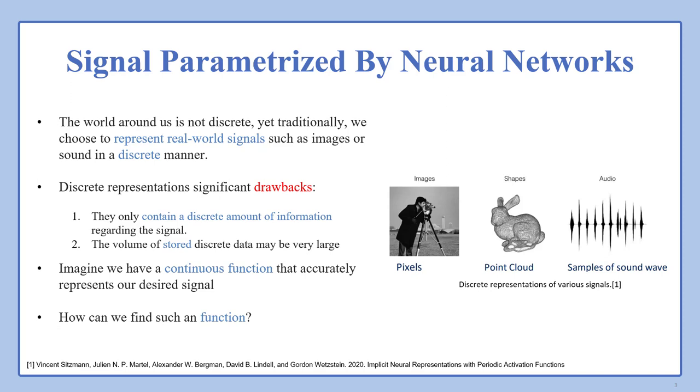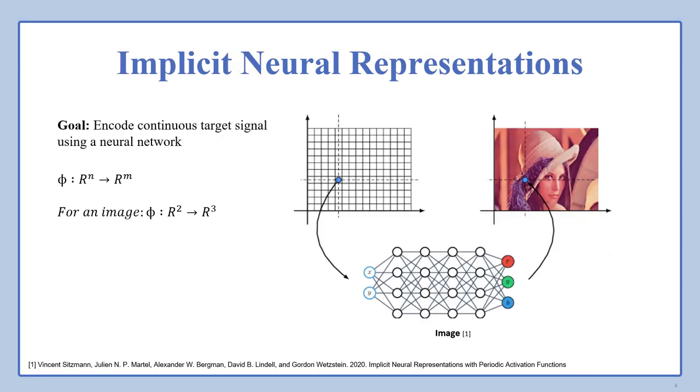Imagine we have a continuous function that accurately represents our desired signal. How can we find such a function? This is implicit neural representations. The goal of INR is to encode continuous target signals using a neural network, so we have a mapping function that maps from the n-dimensional space to m. For example, for an image, we have a neural network that maps x and y coordinates to its corresponding RGB values.